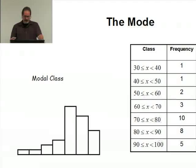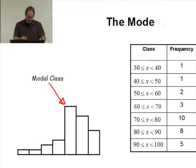If I did a histogram, the modal class would be this guy, which is my 70 to 80 group.